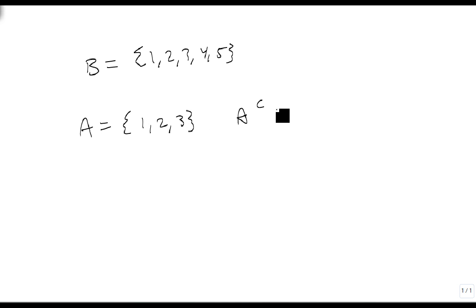This means that A complement is equal to 4, 5, because we have the 1, 2, 3, so all we're missing is the 4 and the 5. And that's how we find the complement of a set.